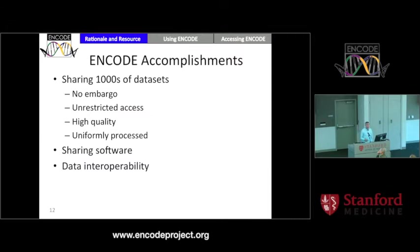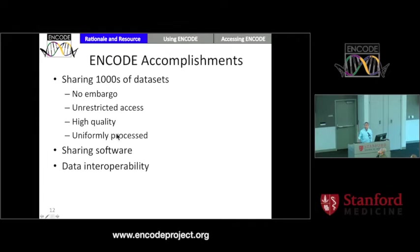To date, ENCODE has done a lot of useful things. We're sharing thousands of data sets today without any embargo — there's no wait period until the consortium has published. They're shared through unrestricted access, equivalent to GEO. There's no signing up for dbGaP or buying an account to access the data. The data are uniformly processed to a large extent, which minimizes the chance of finding differential effects that are really analysis artifacts when doing cross-dataset comparisons.